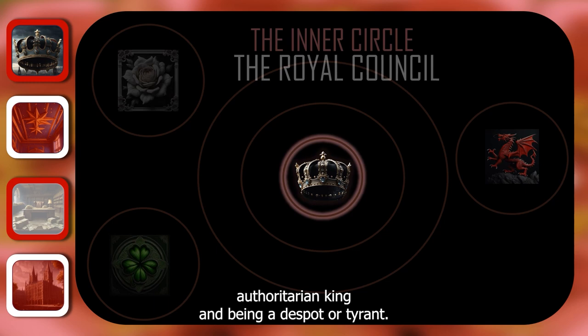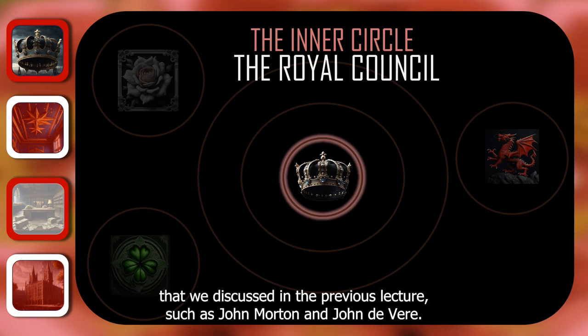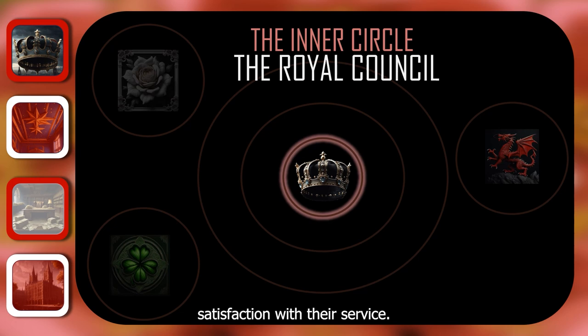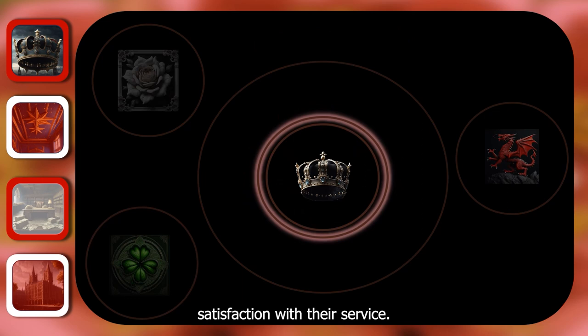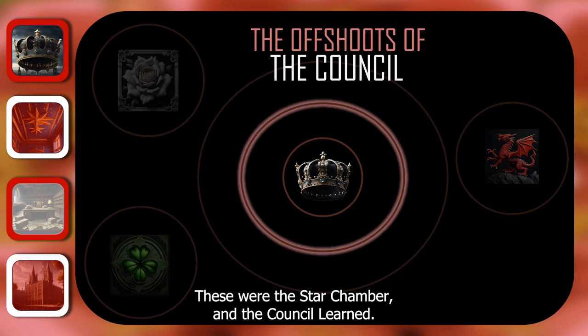The inner circle would represent the King's closest advisers — key members of the Royal Council that we discussed in the previous lecture, such as John Morton and John de Vere. These men and their families could gain considerable wealth and prestige due to their positions at court. However, their favour was entirely dependent on the King's satisfaction with their service. The next circle represents the offshoots from the Royal Council: additional courts of law that administered the King's justice — the Star Chamber and the Council Learned.